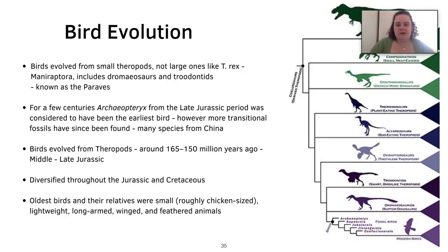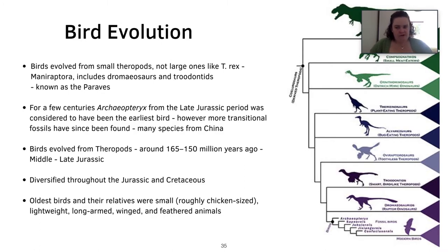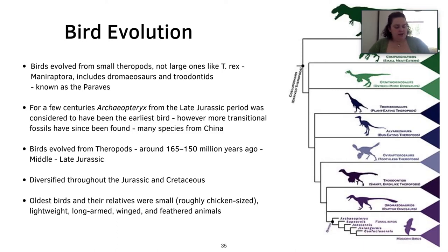Now we move to bird evolution. Birds evolved from small theropods — not large ones like T-Rex — specifically from the group Maniraptora, which includes Dromaeosaurs and Troodontids, also known as Paraves. For a few centuries, Archaeopteryx was considered the earliest bird. However, more transitional fossils have since been found, many from China. Birds evolved from theropods around 165 to 150 million years ago, during the middle and late Jurassic, and diversified through the Jurassic and Cretaceous. The idea that birds came from dinosaurs arose only a few years after Darwin's On the Origin of Species, around 1861, when the first Archaeopteryx fossils were found.